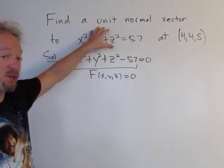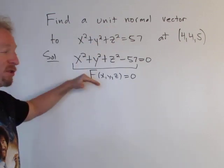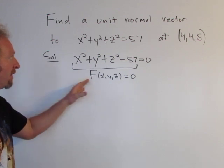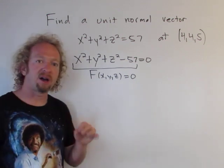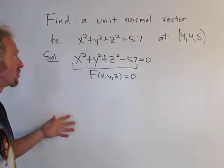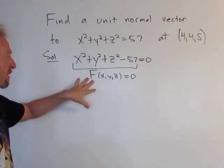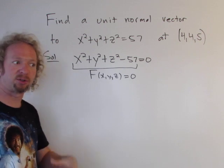So now the question becomes find a unit normal vector to this level surface at the point (4,4,5). To find a unit normal vector for a level surface, we can think of what's the simplest normal vector we can find—that's the gradient vector. So we'll find the gradient vector of big F and then we'll normalize it, we'll turn it into a unit vector.